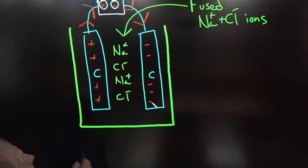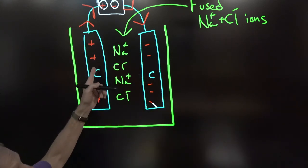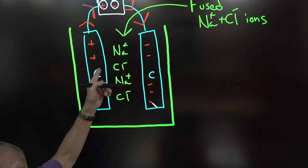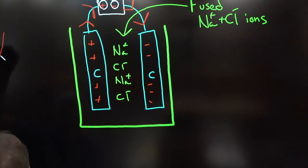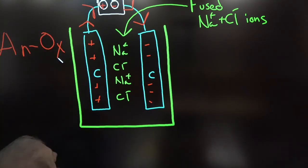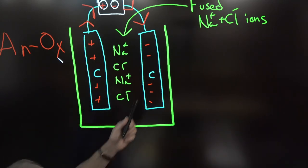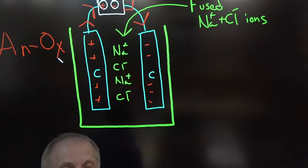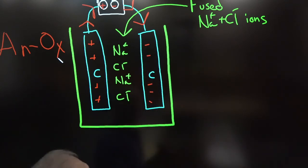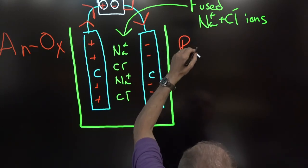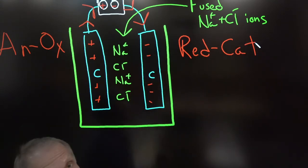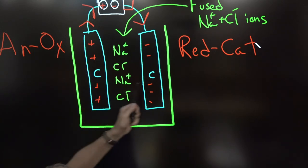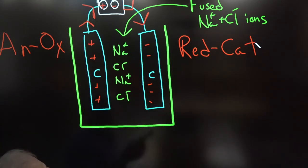Since this electrode is losing electrons — that's oxidation — this is the anode. On the other side, they're gaining electrons — that's reduction — so that is the cathode. 'An ox' on this side, 'red cat' on that side.